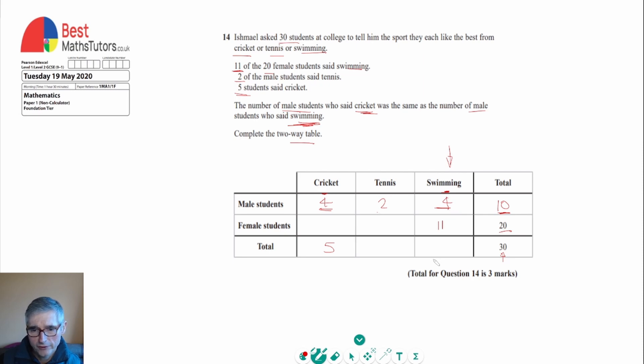We can see we want to find the total. Well, if we've got four male students who like swimming and 11 female students who like swimming, the total who like swimming is going to be 15. If we look at anything else that might be missing, we can see that the total for the cricket is five, so since four male students like cricket, then that must mean that one female student must also like cricket.